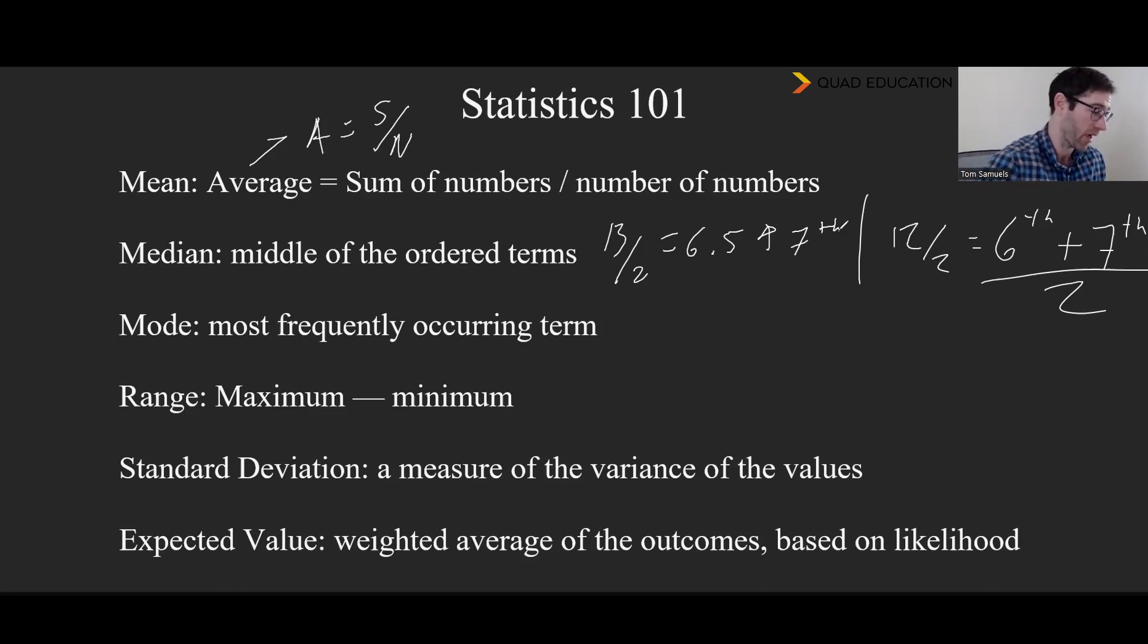Next, we have the range, which is the maximum value and the difference that has from the minimum value. So take the biggest number and subtract from that smallest number. And that's the range. It's the distance between those two.